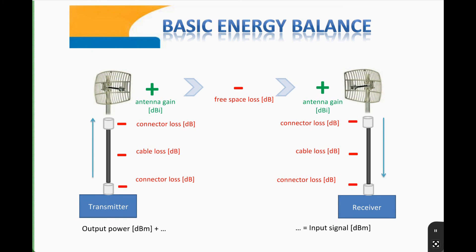Before purchasing equipment to build a link, you should first calculate its energy balance. The necessary parameters include the output power of the transmitter, attenuation of connectors and cables, and gain of the antennas. The attenuation of an RF connector is usually about 0.5 dB. Summing up these values in the appropriate way, you get the power of the signal at the input of the receiver. The resulting signal strength should be compared with the sensitivity of the receiver, usually contained in its specifications as a list of input level and max transfer rate pairs. Of course, these are theoretical values which may slightly differ from actual results.